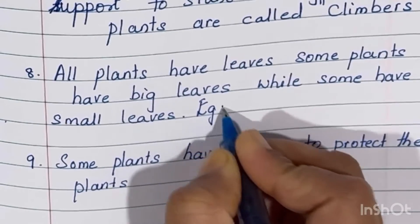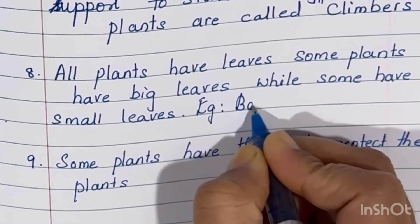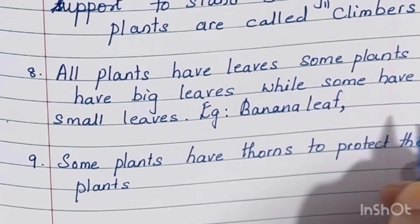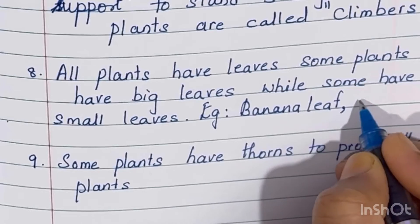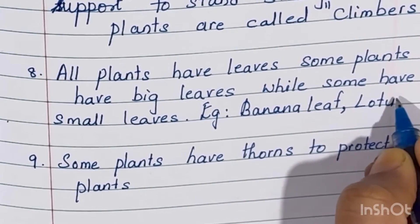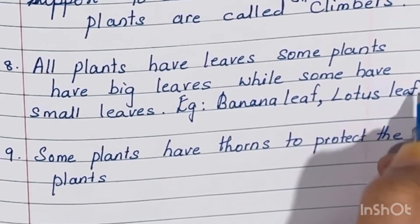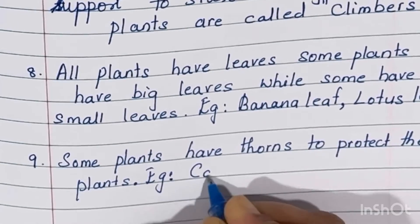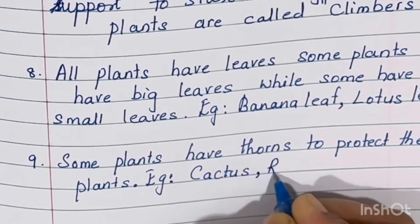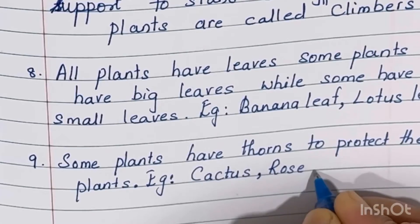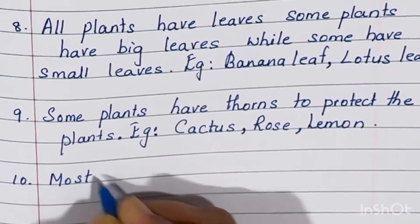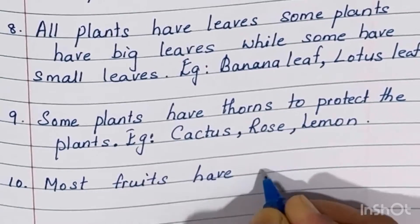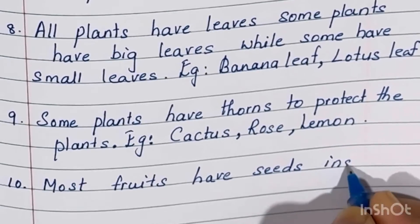Examples of plants with big leaves are banana leaf and lotus leaf. Examples of plants with thorns to protect themselves are cactus, rose, lemon, etc.